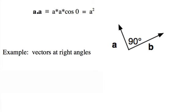Another simple case. If a and b are at right angles, a dot b equals ab cos 90 degrees. And cos 90 degrees is zero.